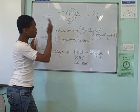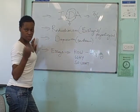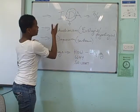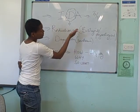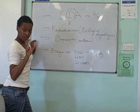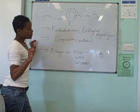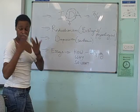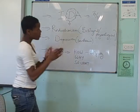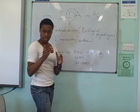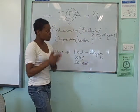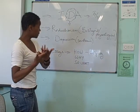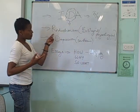Hi, welcome to this explanation of reductionism. Reductionism comes under issues, debates and approaches. This is a vital part of your course. The reason being, if you don't incorporate issues, debates and approaches into your essay, you can only get a maximum of about 8 out of 16. So you want to make sure that you can incorporate it into your essay. So we're going to be looking at reductionism.